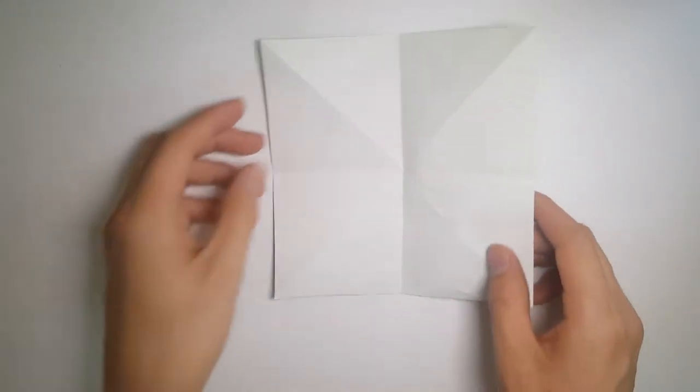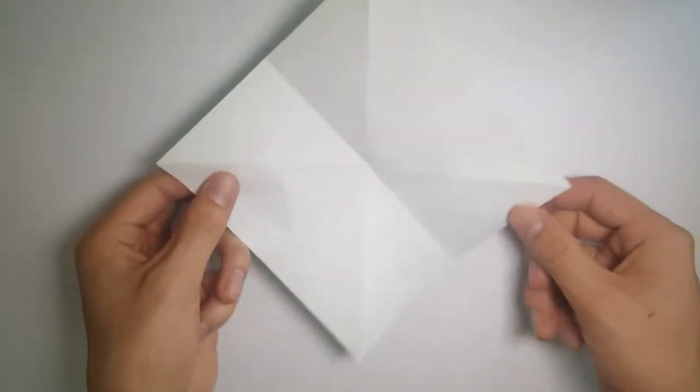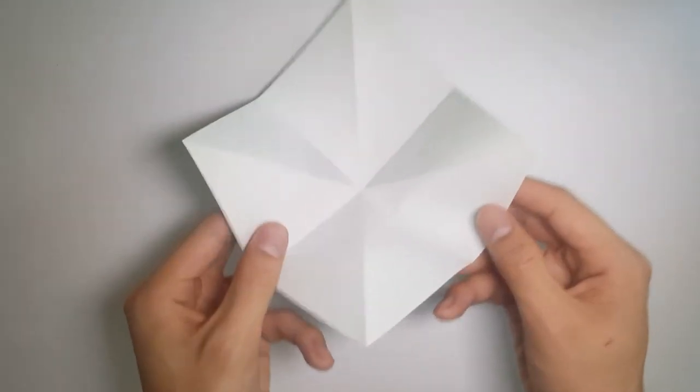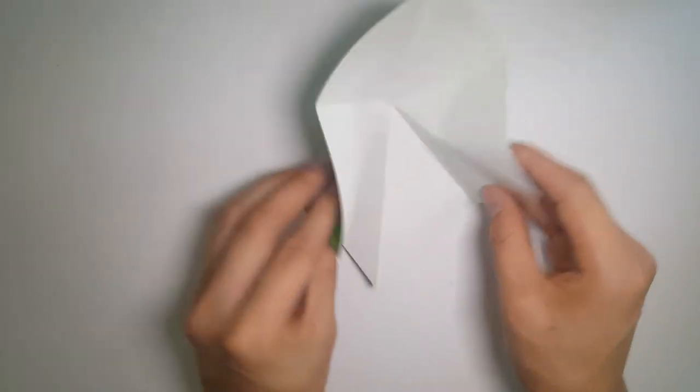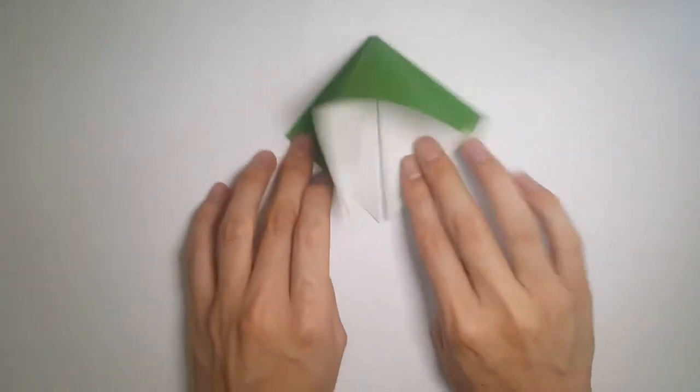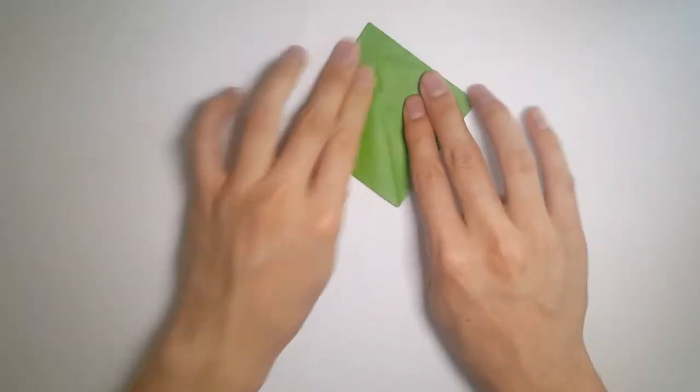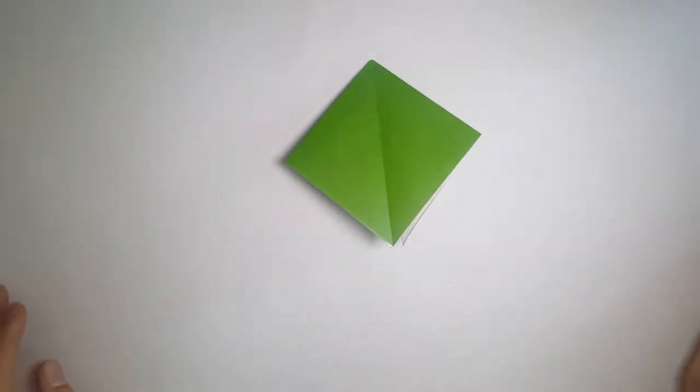Now that we've done that, from the sides, use the creases we've just made to collapse the model into a small square. So we're just pushing the sides in, and then pressing down on the inside, and then pushing down on the top, and so it should look something like this.